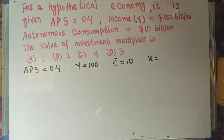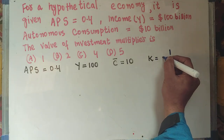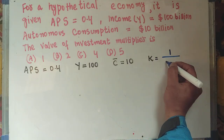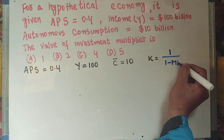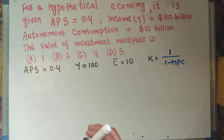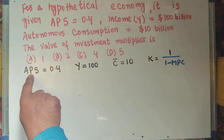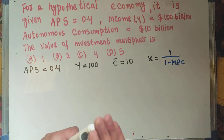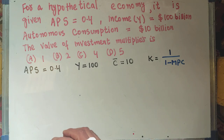We know that the investment multiplier K is equal to 1 divided by (1 minus MPC). This will give us the value of the investment multiplier, but we don't have the marginal propensity to consume here — we are being given the average propensity to save. So let us see how to find MPC. APS is equal to 0.4.